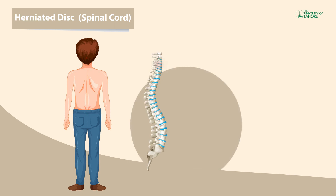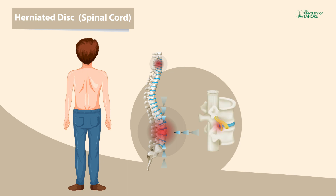The discs between the vertebrae are round cushioning pads that absorb shock and resist compression. A lumbar or lumbosacral disc herniation could affect the nerve roots.